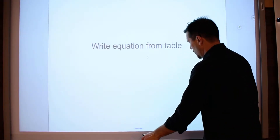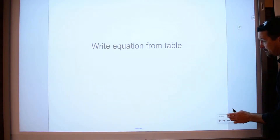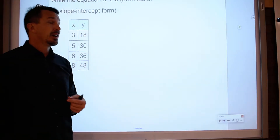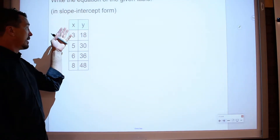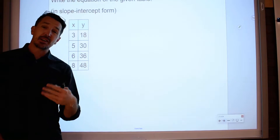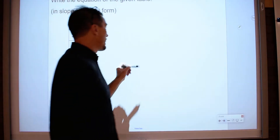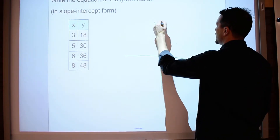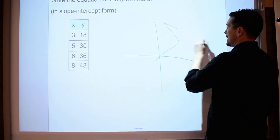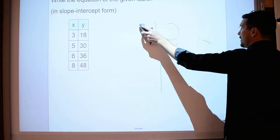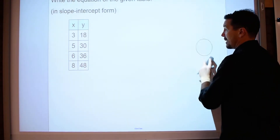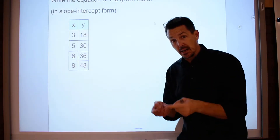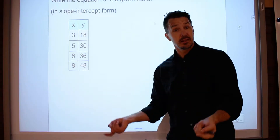We're just going to show you some tables and see what we're talking about. The only problem with writing an equation from a table is you can't just pick the first two points and go — you need to verify that all the points create a line. So the only thing about writing an equation from a table is that I first have to make sure that the rate of change, or the slope, is constant, which means it's linear.